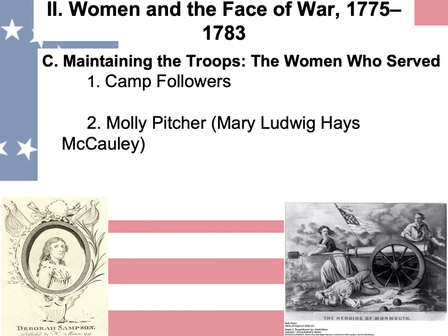Molly Pitcher — her actual name Mary Ludwig Hayes McCulley — is shown here at the cannon firing away. She was known to bring a pitcher of water to the men who were battling. When her husband collapsed, whether from illness or heat, she took over and went out to battle, taking control of the cannon. Because of what she did, when the battle ended, George Washington rewarded Molly Pitcher by making her a non-commissioned officer and giving her a pension.